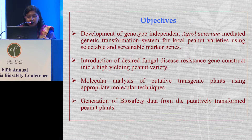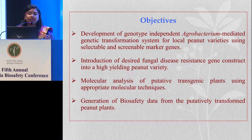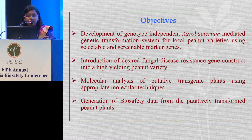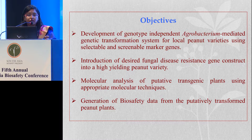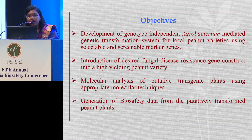Keeping these things in mind, we designed this present investigation under the following objectives: development of a genotype-independent agrobacterium-mediated genetic transformation system for local peanut varieties using selectable and screenable marker genes; introduction of a desired fungal disease resistance gene construct into a high-yielding peanut variety; molecular analysis of putative transgenic plants using appropriate molecular techniques; and finally, generation of biosafety data from the putatively transformed peanut plants.